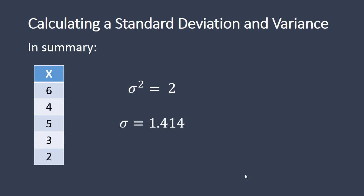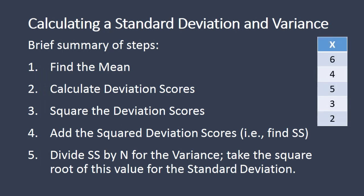In summary, we had a variance of 2 and a standard deviation of 1.414. As a brief review: to calculate the standard deviation and variance, first find the mean, then calculate deviation scores by subtracting the mean from each value, then square those deviation scores, then add up the squared values to get SS. Finally, divide SS by N to find the variance, and take the square root of the variance to get the standard deviation. That concludes the video on calculating the standard deviation and variance. Thanks for watching.